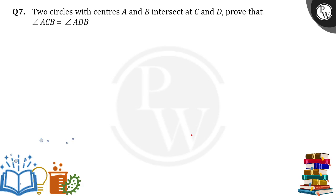Hello everyone. Two circles with centers A and B intersect at points C and D. We need to prove that angle ACB is equal to angle ADB.